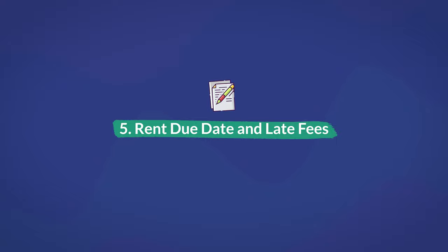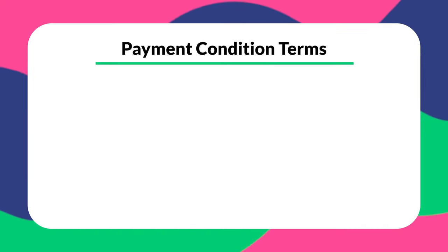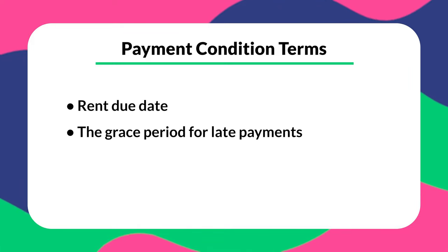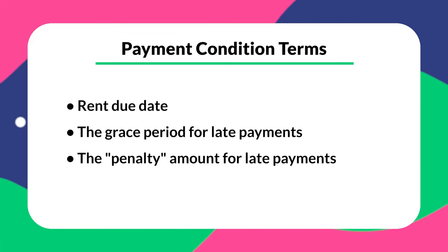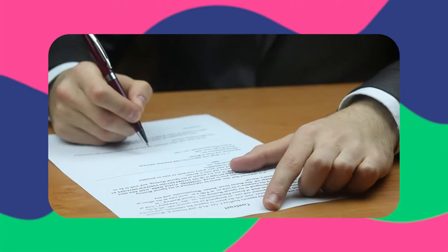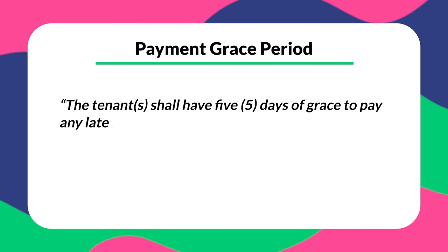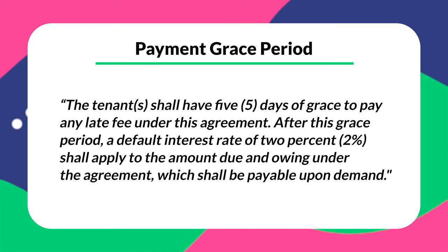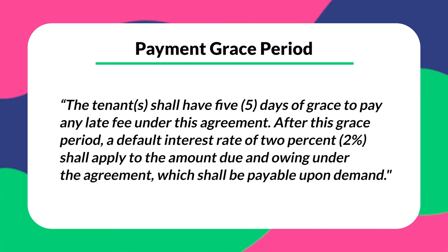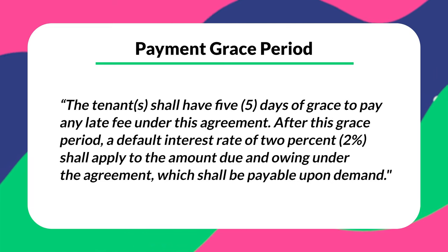Number five is rent due date and late fees. You must specify payment conditions as clearly as possible. In this clause, you have to point out the due date for rent, the grace period for late payments, and the penalty amount that you're going to charge for late payments. Without this clause, you might have an issue collecting late payments. If you're going to include a grace period, make it as clear as possible, such as: 'The tenant shall have five days of grace to pay any late fees under this agreement. After the grace period, a default interest rate of two percent shall apply to the amount due and owing, which shall be payable upon demand.'